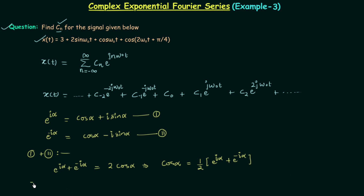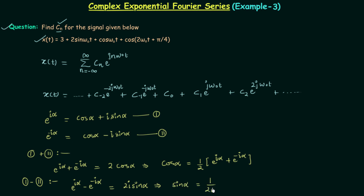Subtracting the second equation from the first gives e raised to power j alpha minus e raised to power minus j alpha on the left-hand side, and the cos alpha terms cancel, leaving twice of j sin alpha. So we can write sin alpha is equal to 1 divided by 2j times the bracket e raised to power j alpha minus e raised to power minus j alpha. We will use these formulas to convert the given expansion.